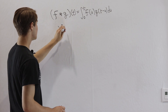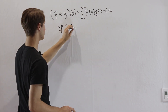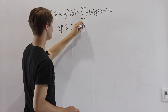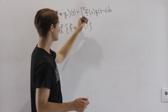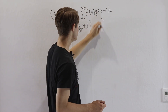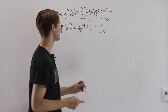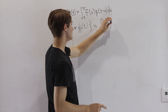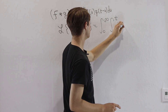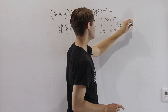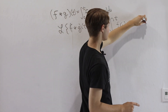We want to think about the Laplace transform of this convolution, f★g of t. The definition of the Laplace transform is the integral from 0 to infinity of this function times e to the negative st. Our inner function is the integral from 0 to t of f of u times g of t minus u, and then we have du dt.